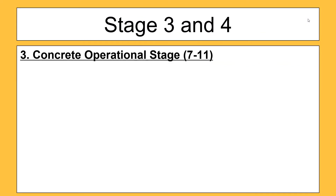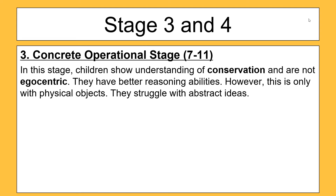Stage three is the concrete operational stage, from ages seven to eleven. Not much really happens in this stage — they develop a little bit more in their reasoning and can talk more about concrete, physical things. They struggle with abstract ideas, but most importantly they sort of master and show a good understanding of conservation, and they are no longer egocentric.